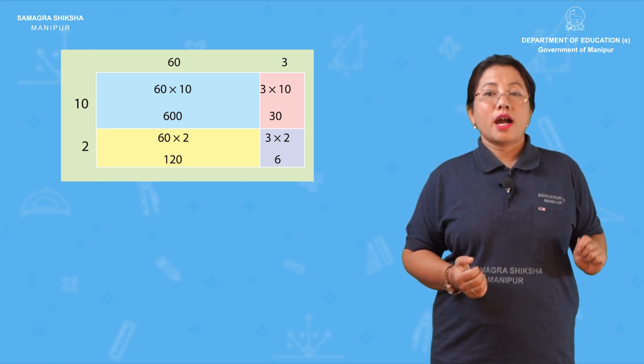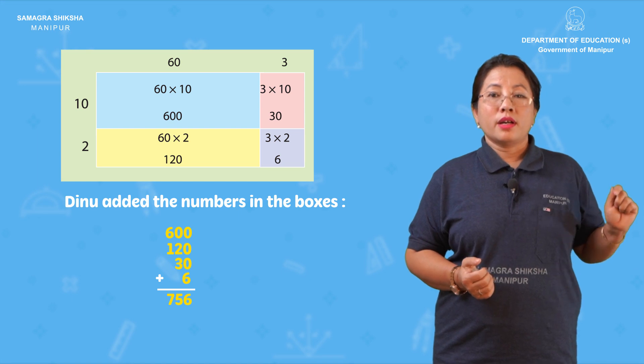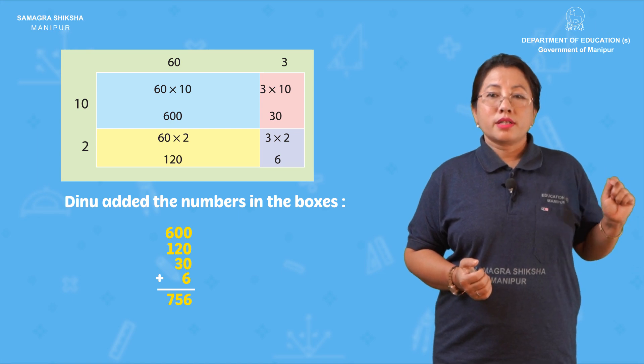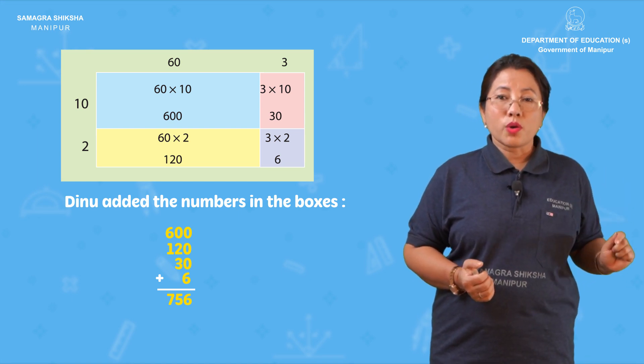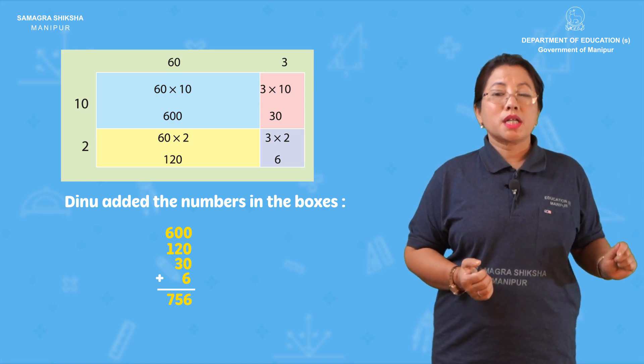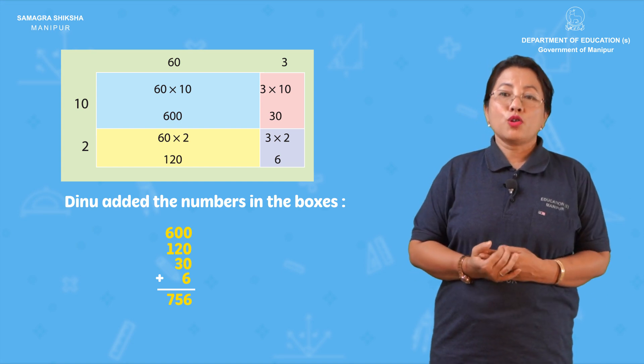Yes, right: 600 plus 30 plus 120 plus 6 — all together.